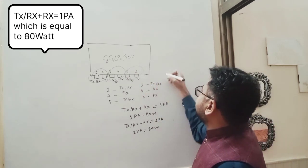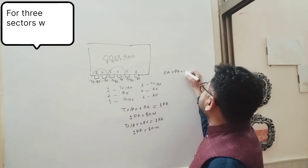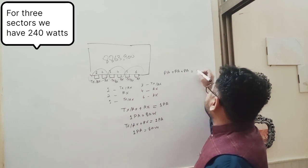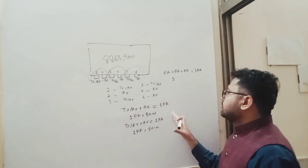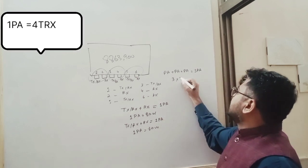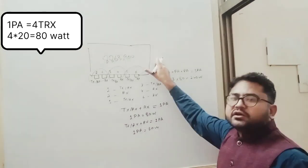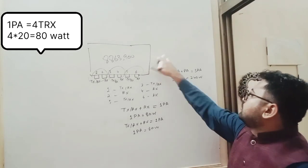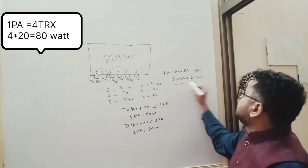Now for the third sector, we have 3 PA, equal to 240 Watt.